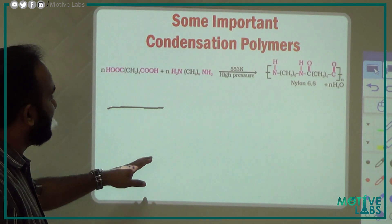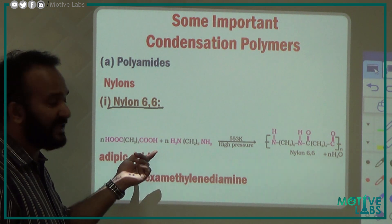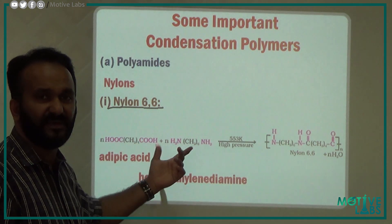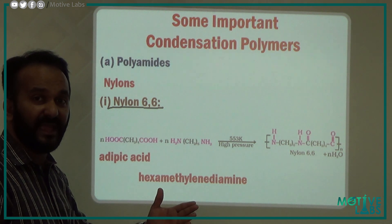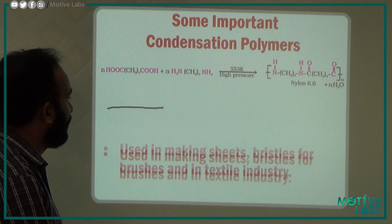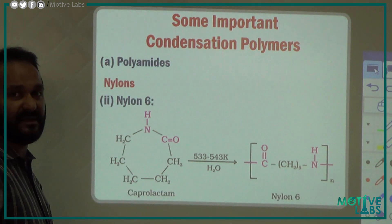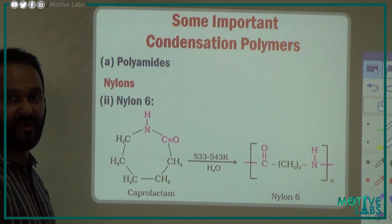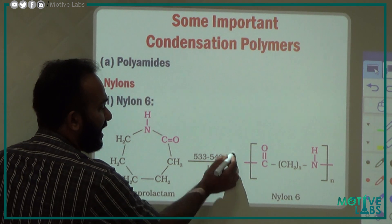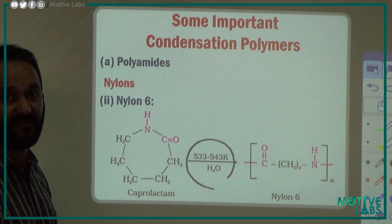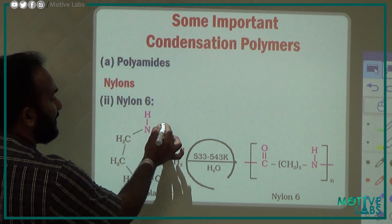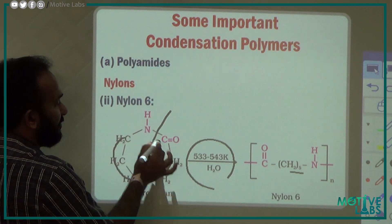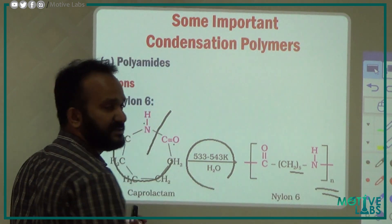This is Nylon 6. Nylon 6 uses caprolactam — a combination of CH2 five times with NHCO. We heat caprolactam at 533 to 543 Kelvin temperature. The ring breaks open and you can download — i.e., extend — that chain. CH2 five times repeating. This is called an amide linkage.